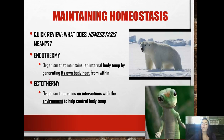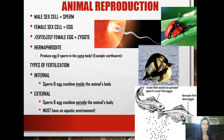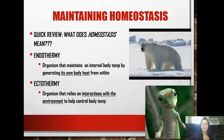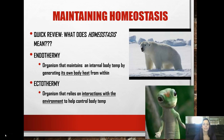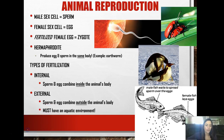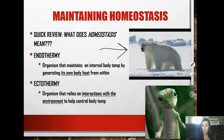Another term you should be familiar with is homeostasis. Quick review: homeostasis is the ability to maintain a constant internal environment. Endothermy versus ectothermy is what we're going to talk about based on homeostasis. Endothermy is an organism that maintains an internal body temperature by generating its own heat, like this polar bear - polar bears live out in the cold but are still able to control their body temperature. Ectothermy is an organism that relies on interactions with the environment - for example, a lizard gets really cold if not under heat lamps.